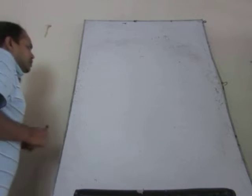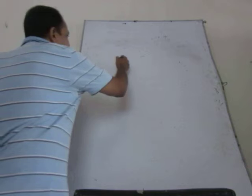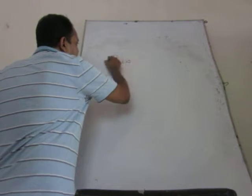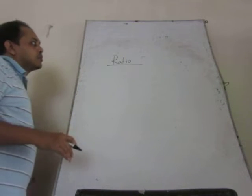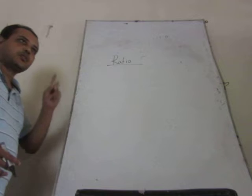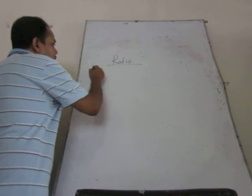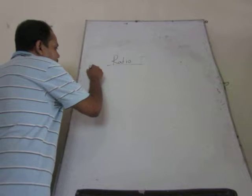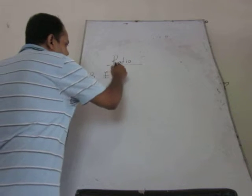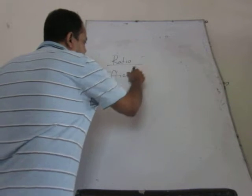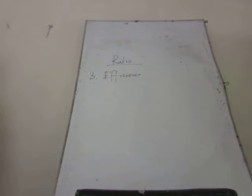Last class we discussed the ratio analysis. Today we will discuss the remaining part of the ratio. Today we are going to discuss two different topics. Number three, one is efficiency. We will start our discussion with efficiency ratios.